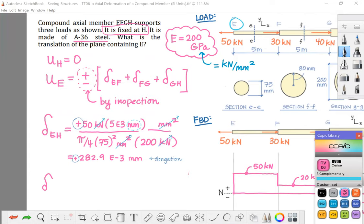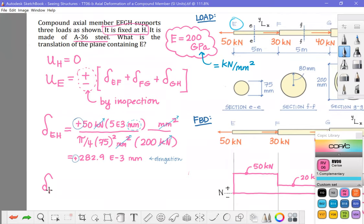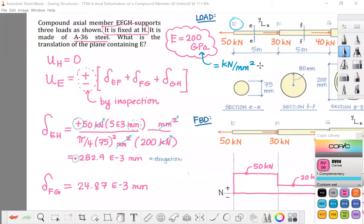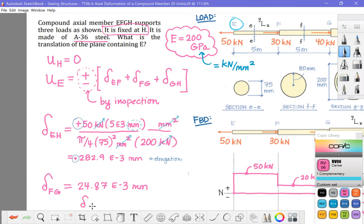So the deformation in FG is equal to 24.87 E-3 millimeters. These of course are to four sig figs because when I sum them together, I want to report my final answer to three sig figs. This one is also positive. So this is another elongation.